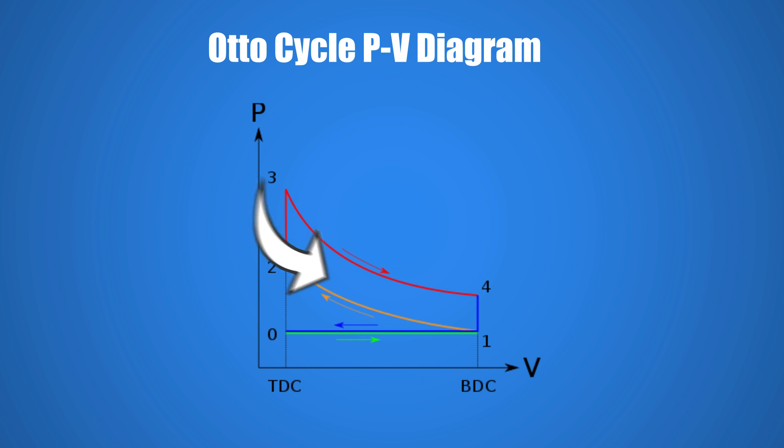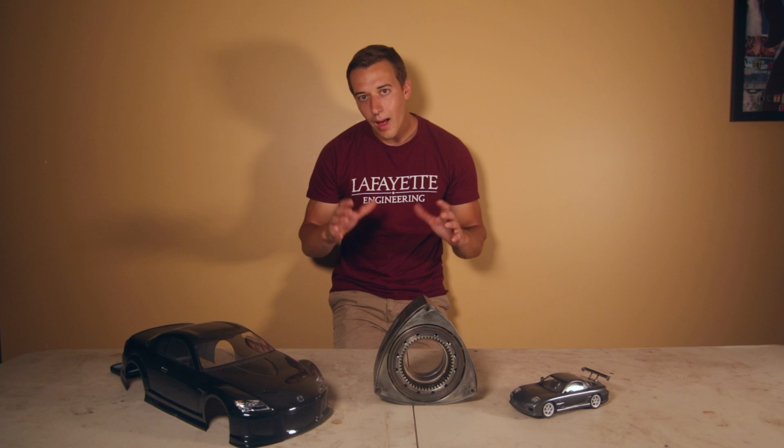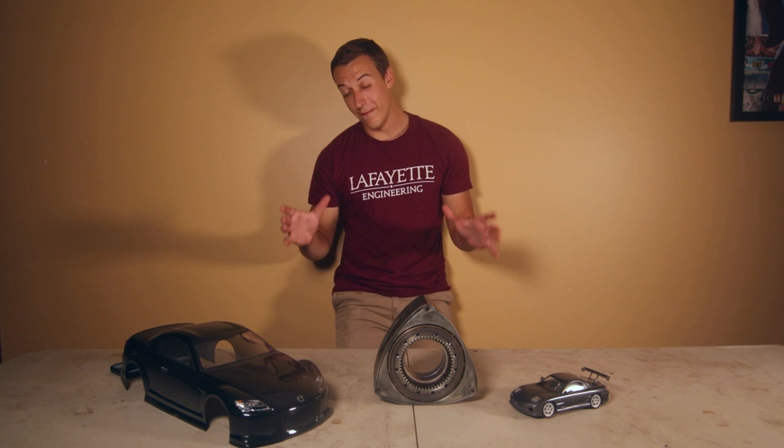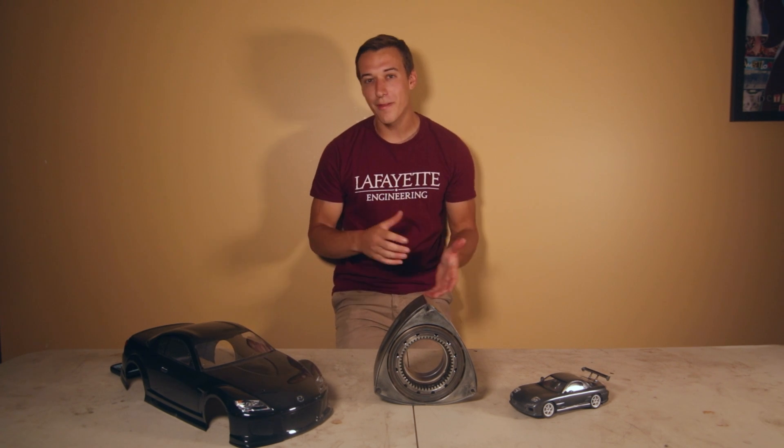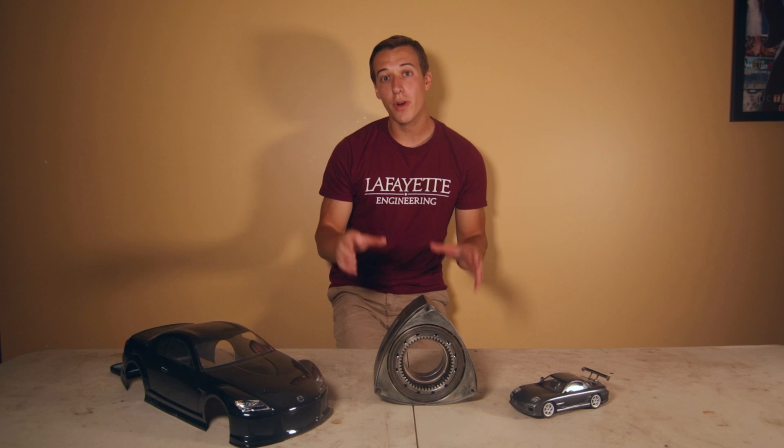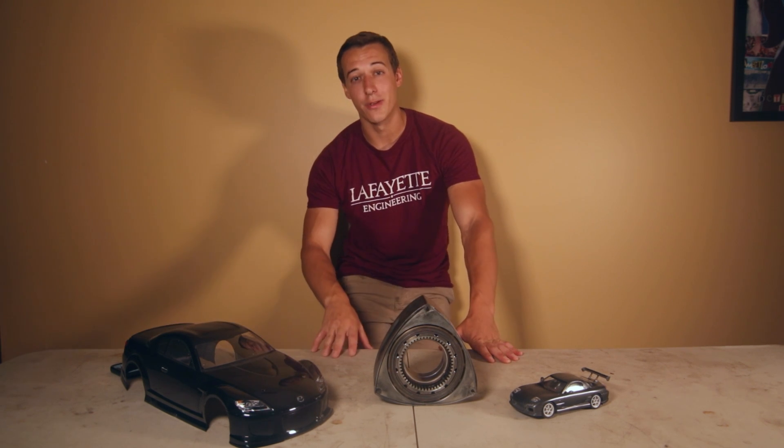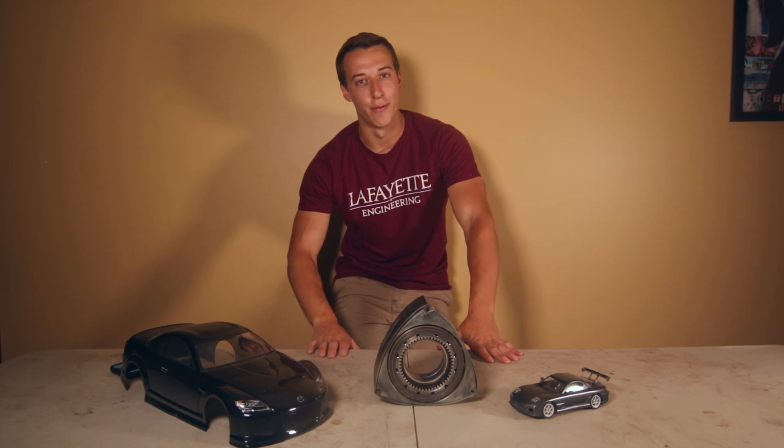There are four states in the ideal Otto cycle labeled one through four with an additional state zero to represent the intake and exhaust. I could talk about this cycle for a very long time but it's kind of beyond the scope of this video so if you're really interested in learning more about the Otto cycle you can look it up on Wikipedia and read all about it.